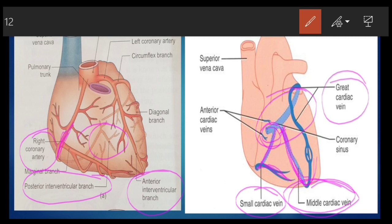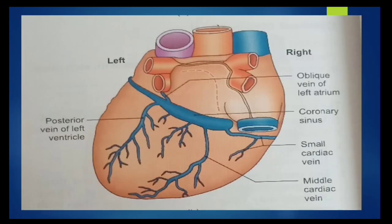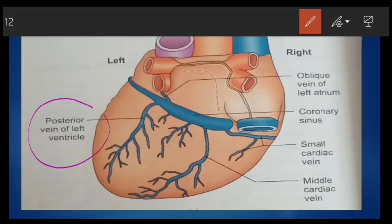The right marginal vein is present and also joins the small cardiac vein. The posterior vein of the left ventricle runs on the diaphragmatic surface of the left ventricle and ends by draining into the coronary sinus.